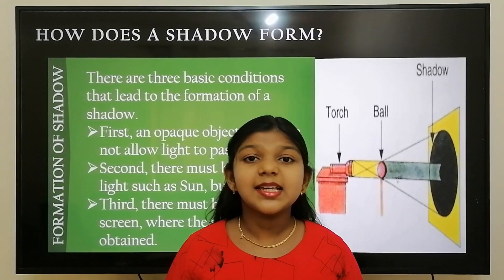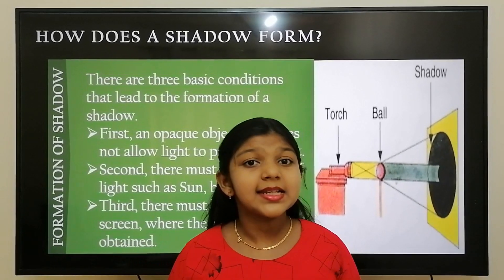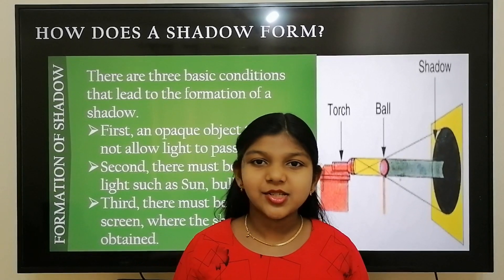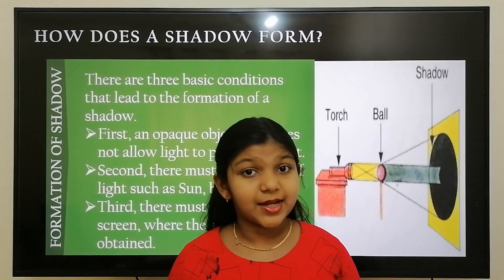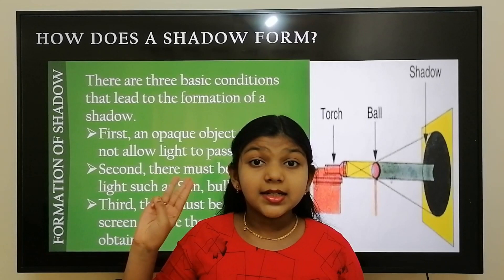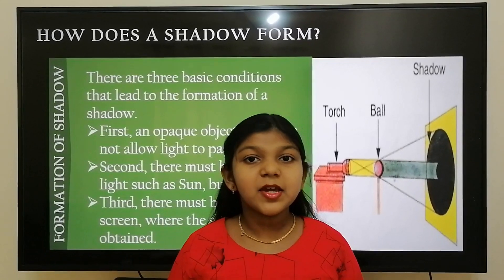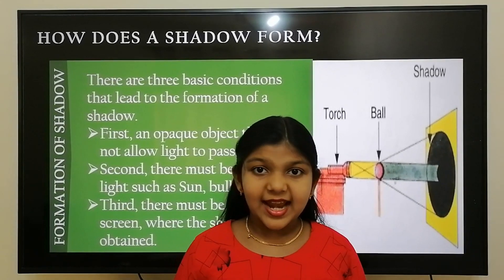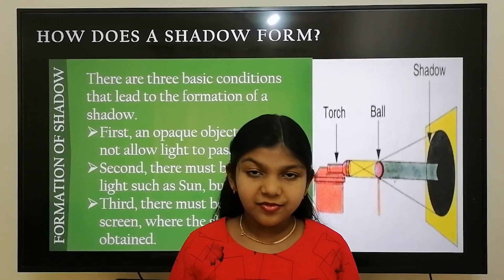Second, there must be a source of light — for example, the sun, a torch, a bulb, etc. Third, there must be an opaque screen where the shadow is to be formed.